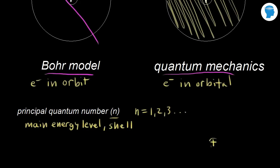For example, if we consider the nucleus: for n equal to one, the average distance from the nucleus is relatively small. Comparing that with n equal to two — a higher energy level — the electron is on average further away from the nucleus and has a higher energy associated with it. That's the idea of the principal quantum number: energy levels or shells, and average distance from the nucleus.